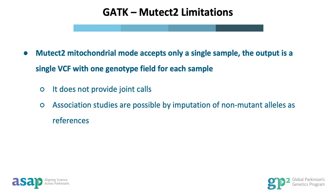Although Mutect2 is a promising new approach, some limitations are worth noting. Mutect2 mitochondrial mode accepts only a single sample, and the output is a single VCF with one genotype field for each sample — it does not provide joint calls. Association studies are possible by the imputation of non-mutant alleles as references.